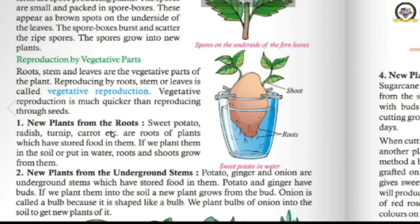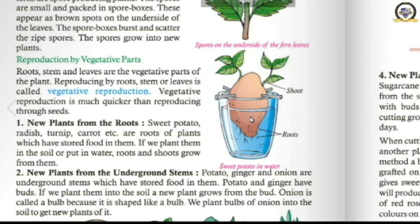First: reproduction from the roots. Plants like sweet potato, radish, turnip, and carrot are roots that have food stored in them. If we plant them and give them water, new roots and shoots grow from them. A new potato grows from a potato itself — new roots originate and a shoot comes out, producing a new plant through roots.